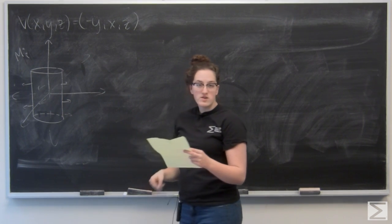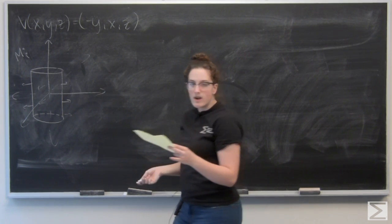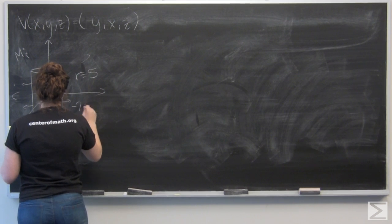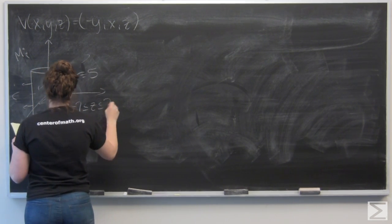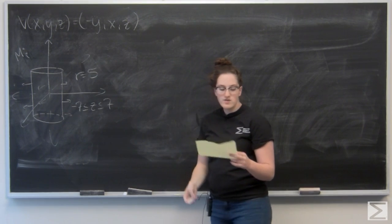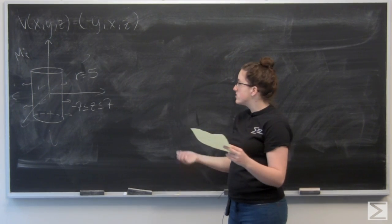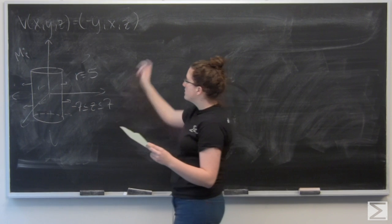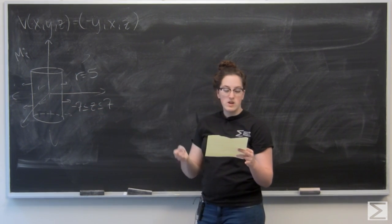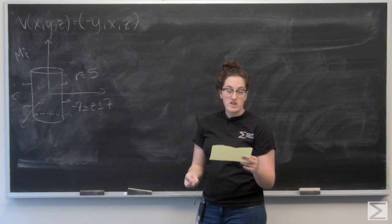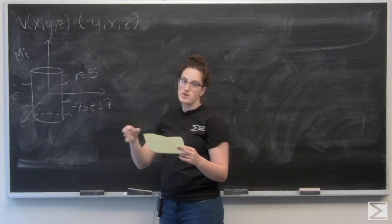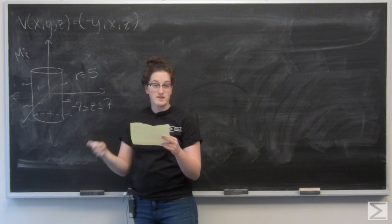I've already drawn it here. Let's write in what the radius is and note that my boundary is for z. I'd like to use the divergence theorem to calculate the flux of V through the cylinder, but the cylinder is not closed. So the first thing I want to do is find a convenient closing surface for it — something that makes it a closed object. Right now I've only got the sides of the cylinder.